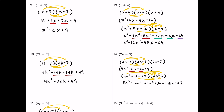Simplifying: 8n cubed has no like terms. For the n squared terms, negative 12n squared minus 24n squared is negative 36n squared. For the n terms, positive 36n plus 18n is positive 54n. The constant negative 27 has no like terms, so it comes along as is.